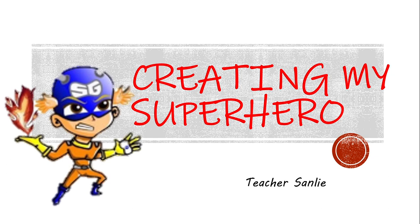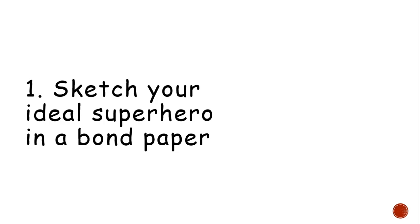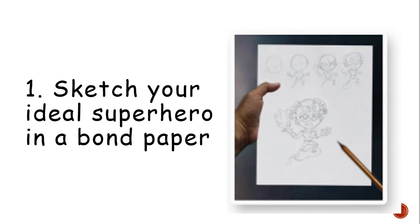We have the steps here to make it simpler. Number one: sketch your ideal superhero on bond paper. This is the very first foundation — we use bond paper and pencil to sketch. Start with shapes: circles, lines, until you create the superhero. For example, the creator uses a circle, then puts a line and makes different shapes until it becomes a superhero. Sketching has been our foundation since day one.